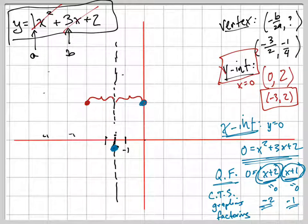Negative 2. Negative 2 is right there. And negative 1 is right there. Hey, look at that. Those are my two x-intercepts. Negative 2 and negative 1. Notice how it's symmetric.